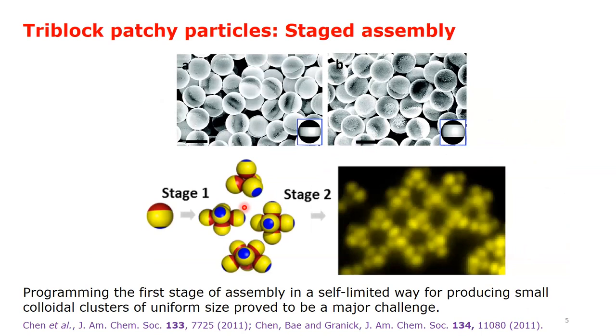the Granick group induced staged assembly in 3D by changing the ionic strength of the medium in steps. However, the first stage produced a distribution of clusters leading to the self-assembly of an amorphous structure in the second stage.